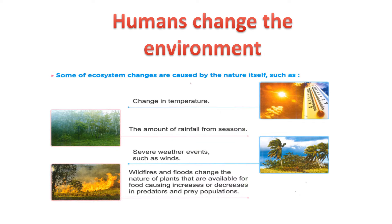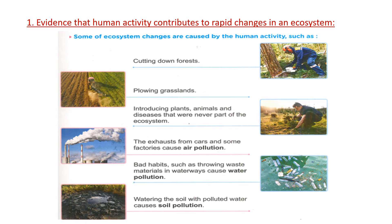Junior Four, you have to only understand this part — don't memorize. Understand the difference between the changes caused by nature, which happen slowly, and changes caused by humans, which happen rapidly. Some ecosystem changes are caused by human activity.